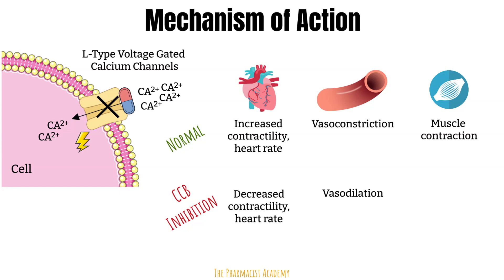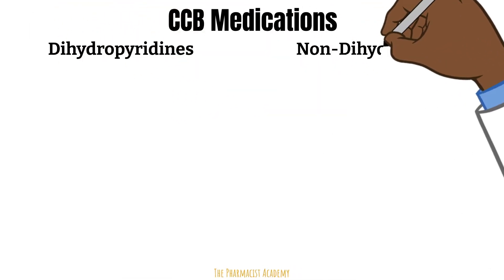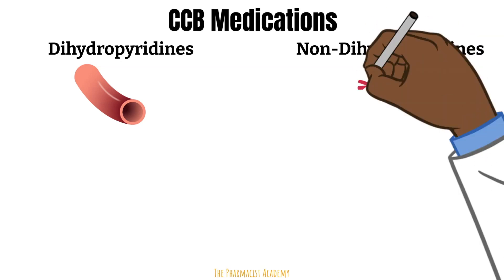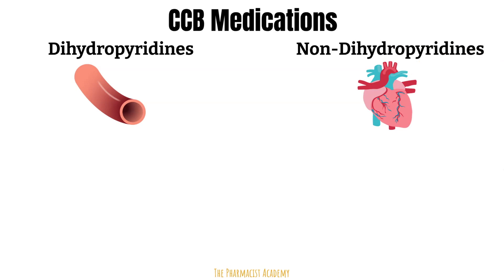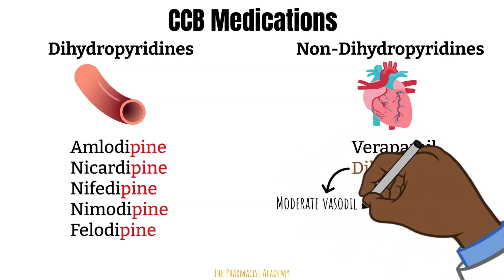Calcium channel blockers all follow this general mechanism, but they are not all the same. There are two main categories: dihydropyridines and non-dihydropyridines. The dihydropyridines activity is mainly in the blood vessels, so they are known as peripheral vasodilators, while the non-dihydropyridines activity is mainly in the heart, slowing heart rate and contractility. Note that dihydropyridines all end in '-ine,' just like dihydropyridine. Diltiazem specifically also has moderate vasodilatory effects.